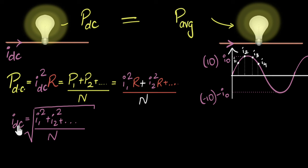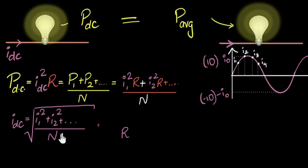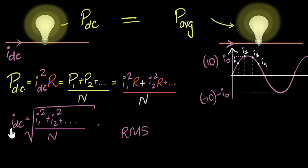Now, what should we name this? We name it based on what we're doing: we're taking a Root of the Mean of the Squares of the currents — because when you calculate power you get current squared. So we take the root of the mean of the squares. That's why this is called the RMS value, and that current is called I_RMS.